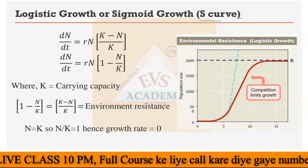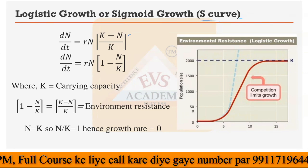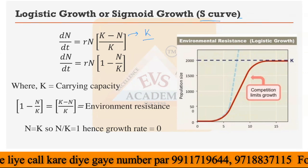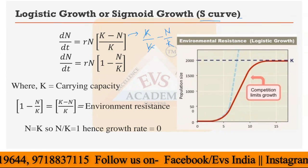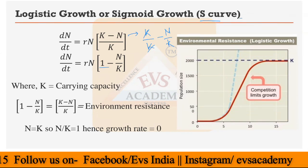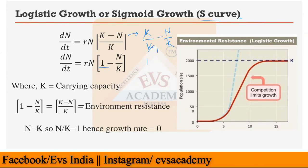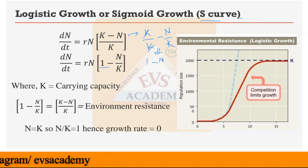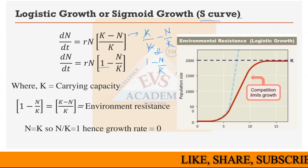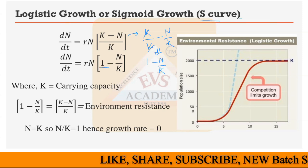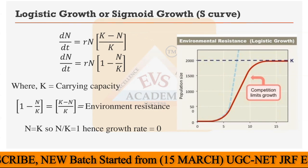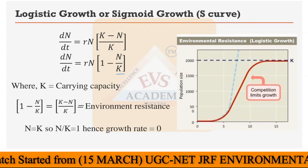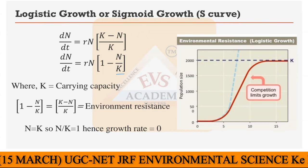Taking the term (K minus N) divided by K, this can be rewritten as 1 minus N divided by K, since K minus K cancels to give 1. So both expressions — (K minus N)/K and (1 minus N/K) — are equivalent and both represent environmental resistance. Here K is the carrying capacity for that particular species in that environment.